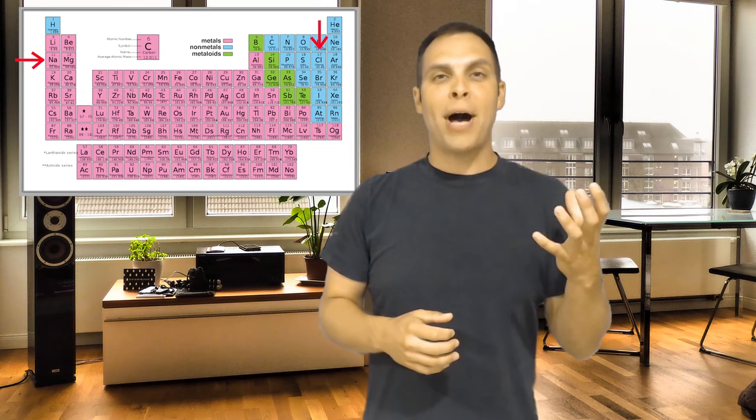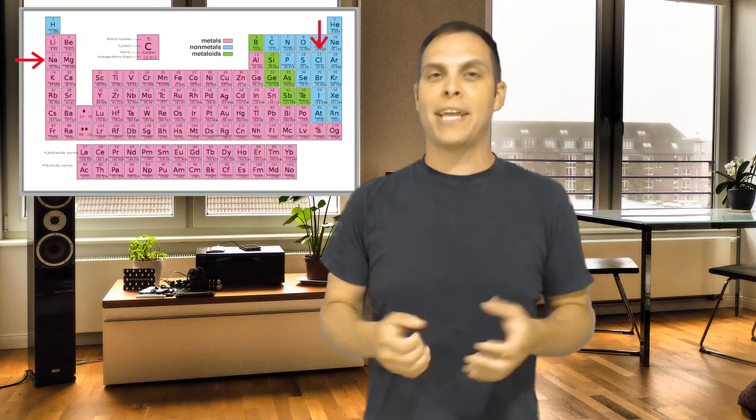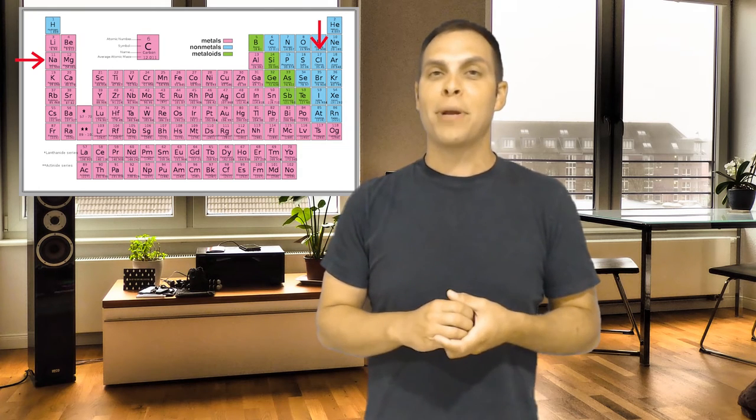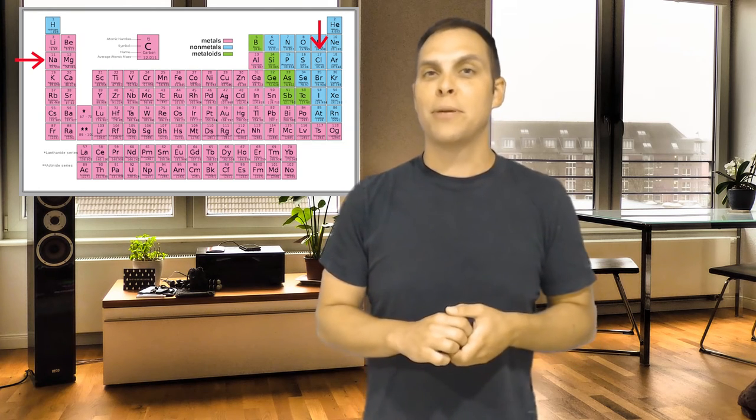So when you combine a sodium atom and a chlorine atom under the right conditions, they will combine to form a compound. That compound is called sodium chloride. You know it better as table salt. But if you actually look at what's going on at the atomic level, rather than sharing those valence electrons, those outer shell electrons, chlorine literally just rips that electron away. It says, I'm just going to take this. And sodium is like, fine, that's great.